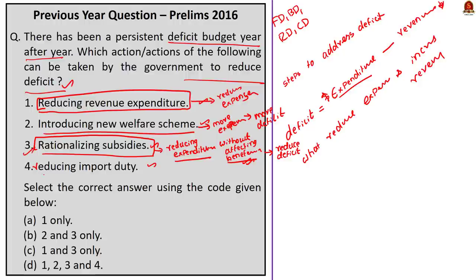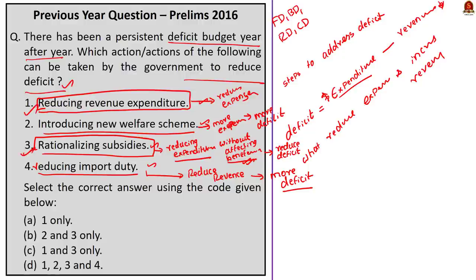Now let us take up the fourth action: 'Reducing import duty.' Import duty is one of the major revenue earners for the government. By reducing import duty, government's revenue decreases, and if government's revenue decreases, government's deficit will increase. So the fourth action will lead to increase in deficit, not decrease. Therefore, action 1 and action 3 will lead to decrease in government deficit. The correct answer here is option C, 1 and 3 only.